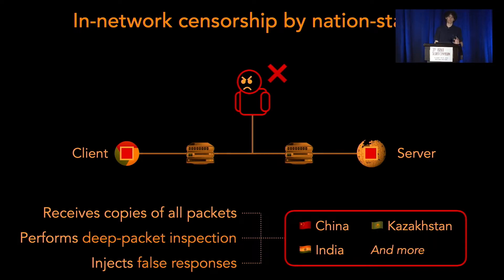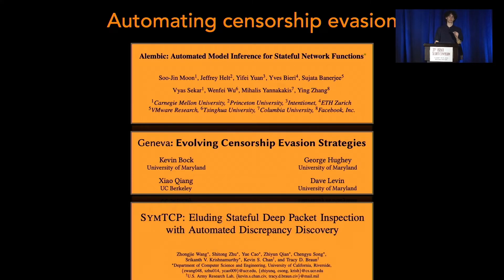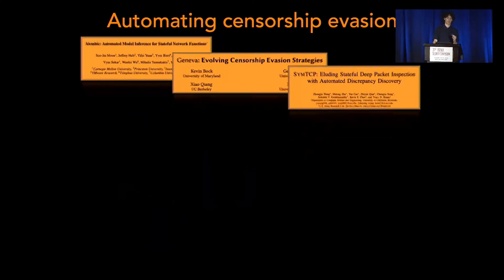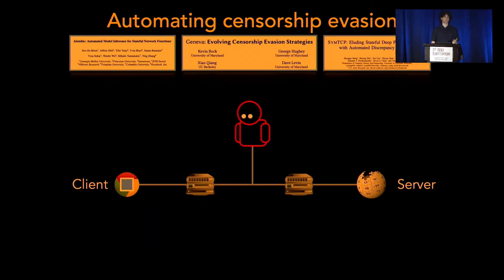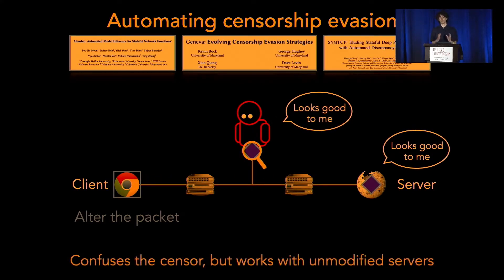There's been a recent thread of research concerned with automating the process of finding censorship evasion strategies. These are Geneva, Alembic, and SimTCP. An evasion strategy is some way of altering a packet such that when you send it over the wire, the censor won't trigger — it will either not know what to do with it or think the request is totally benign — and the end server will interact with it normally.